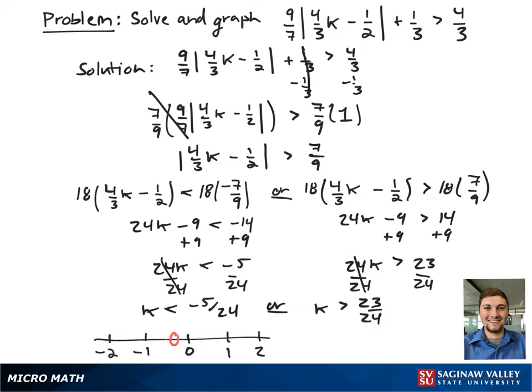Looking at it on a number line, it looks like an open circle from negative 5 over 24 to negative infinity, and union with an open circle from 23 over 24 to infinity.